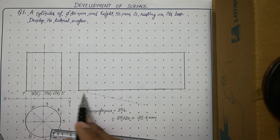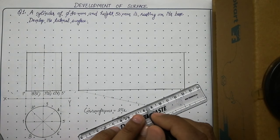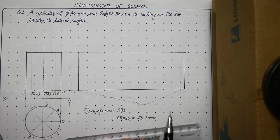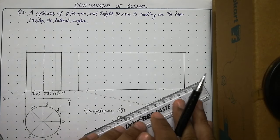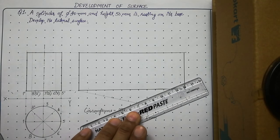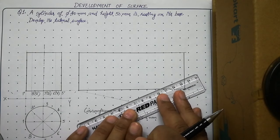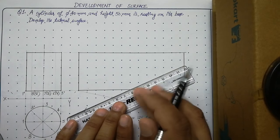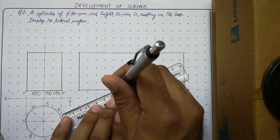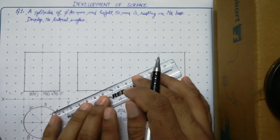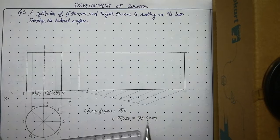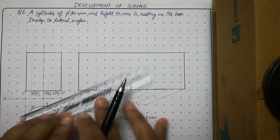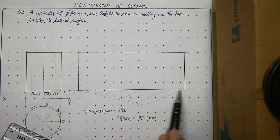With the roller scale, join the last point to the end of the development and draw a thin line. Then align your roller scale with this line, roll it to the next division point, and draw a thin parallel line. Repeat this for each subsequent point to draw thin parallel lines through all 8 division points. This method divides the development length into 8 equal divisions, and from these points draw thin vertical lines which will be the generators.